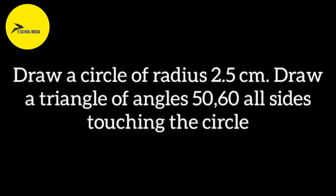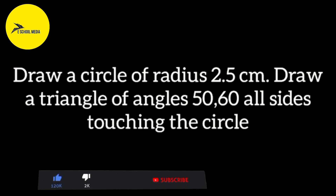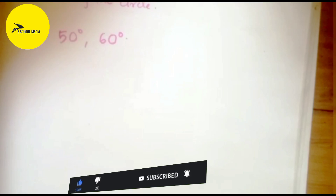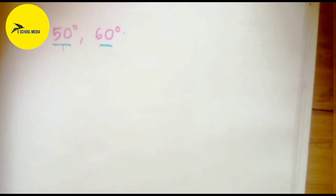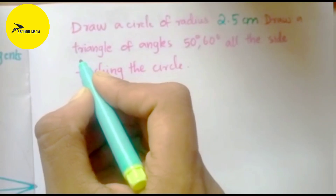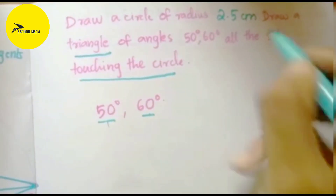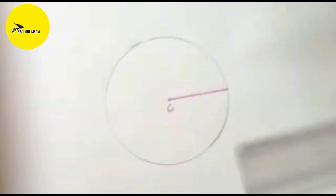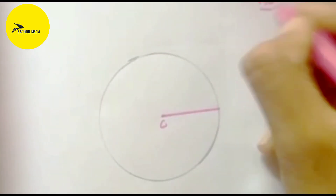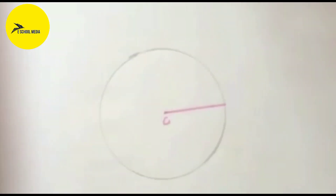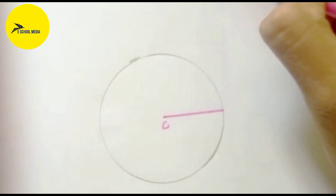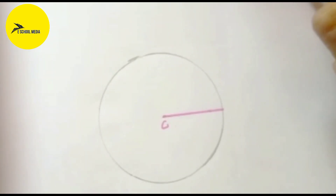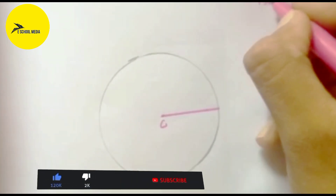Draw a circle of radius 2.5 cm. Draw a triangle of angles 50 degrees, 60 degrees — all sides touching the circle. This question is a little confusing. The third angle: we can see the angles — 50 degrees, 60 degrees. We can see the circle on all sides. The angle is 180 degrees, so 180 minus 50 is 130, and 180 minus 60 is 120.